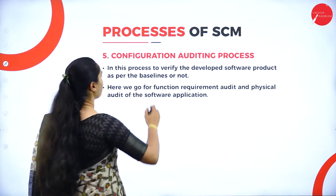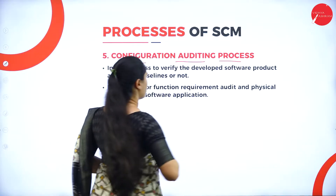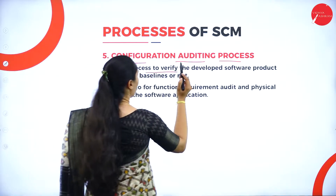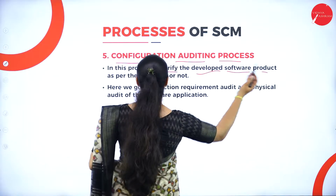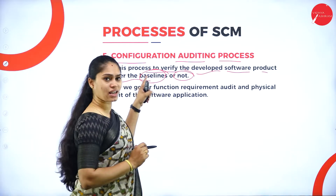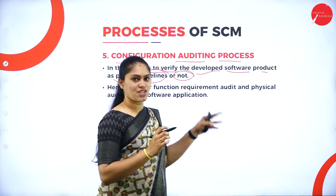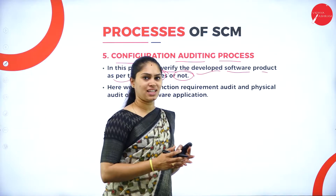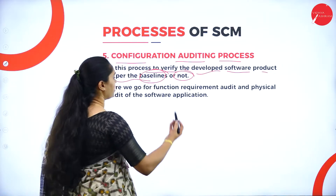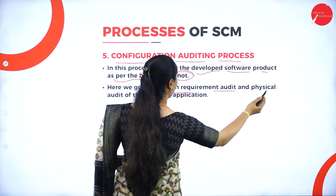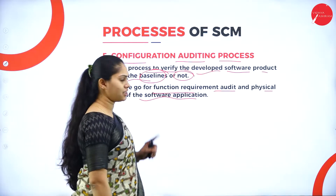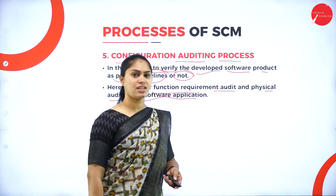Next, we have the configuration auditing process. As we all know, auditing will verify the developed software product as per the baselines — is this as per the requirement? Are these the changes which have been given by the team? That and all will be examined in this stage 5. Here we go for functional requirement audit and physical audit of a software application. By auditing these two, we can get the resultant.